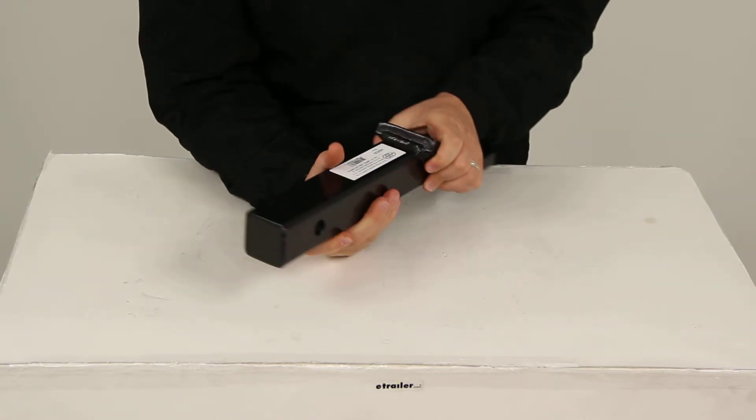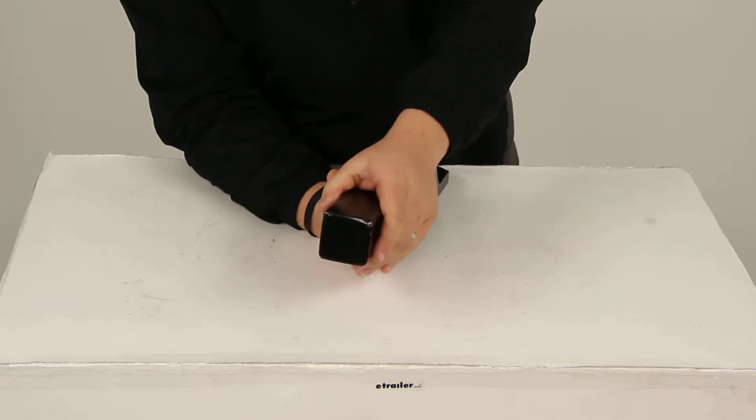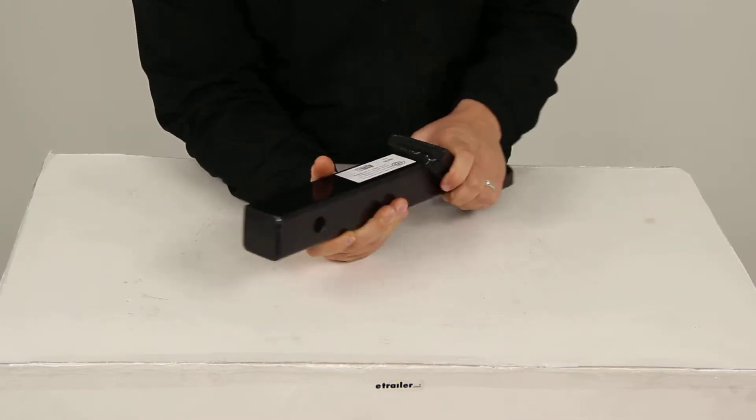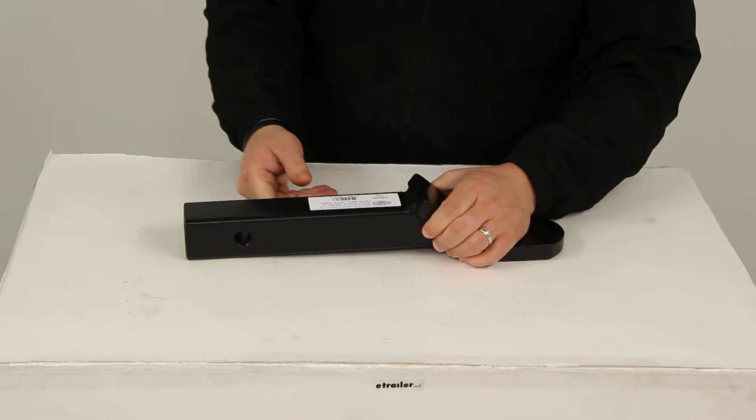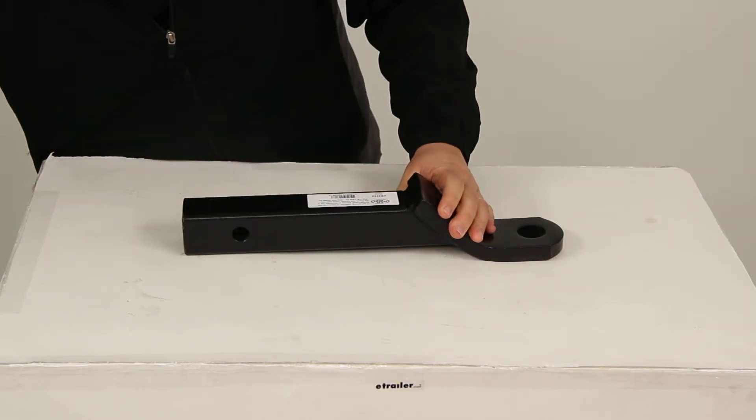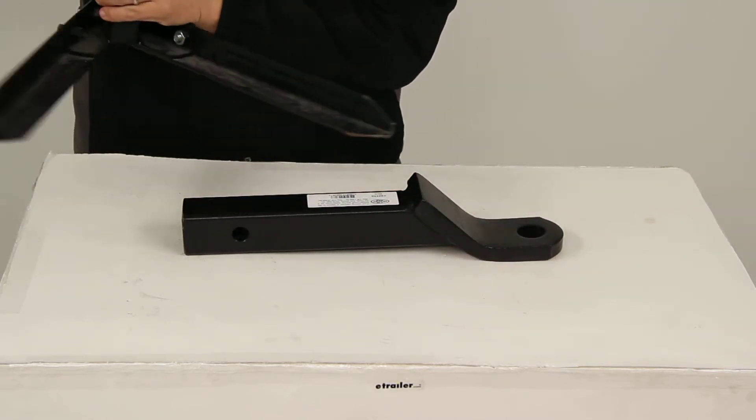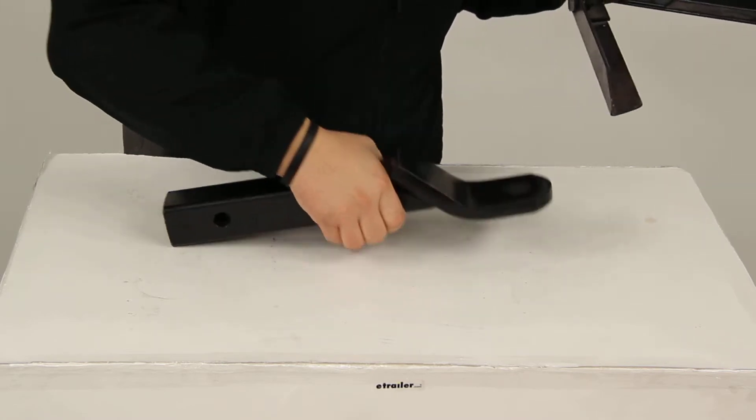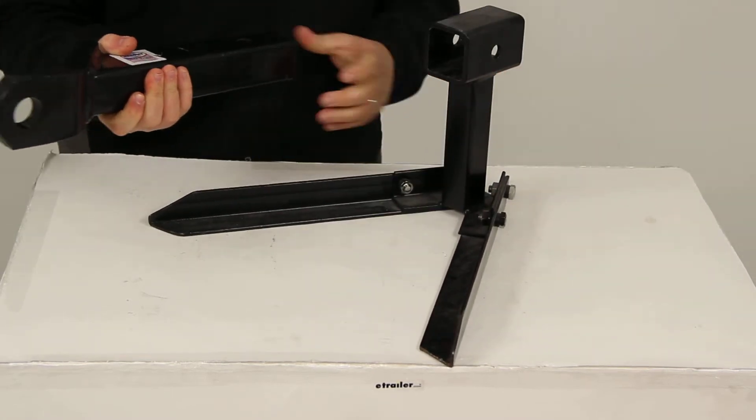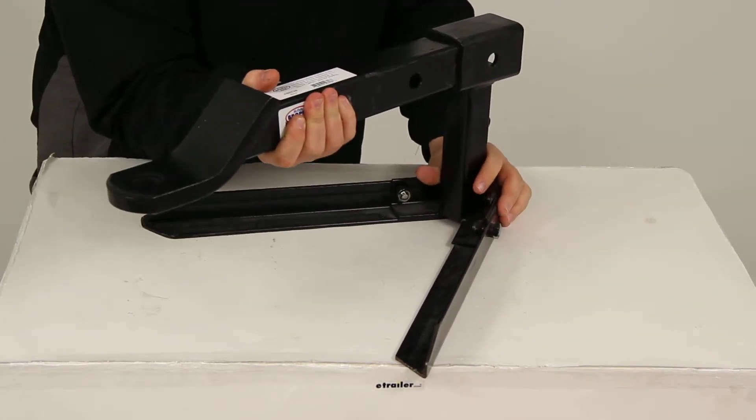It has a nice solid shank here on the back side so it is made from a sturdy steel construction. The way this would install is you would need to take your ball mount and place it into the receiver tube of your hitch.